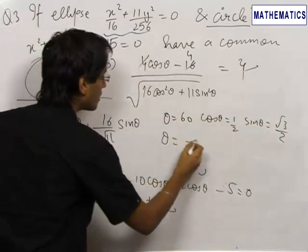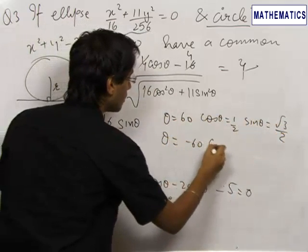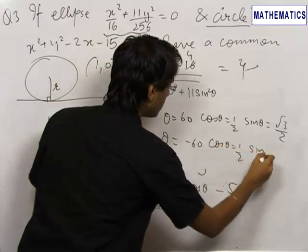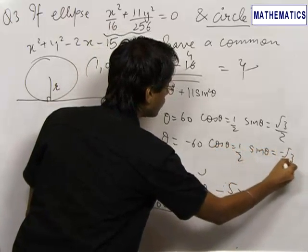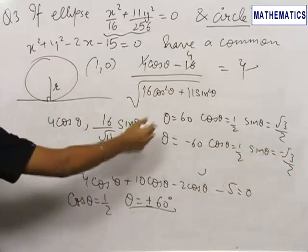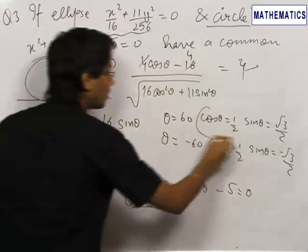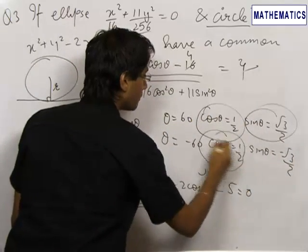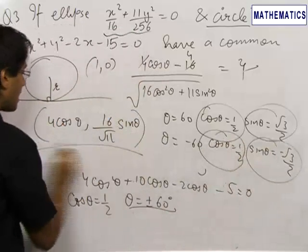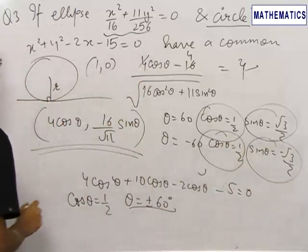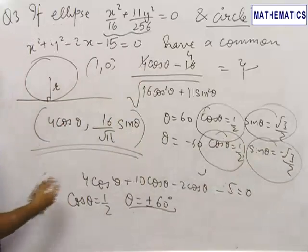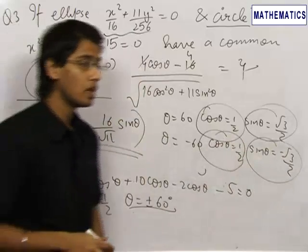For θ = −60°, cos θ = 1/2 and sin θ = −√3/2. We substitute these values into the general point (4 cos θ, 16/√11 · sin θ) to get the final coordinates of the point of contact of the tangent with the ellipse.